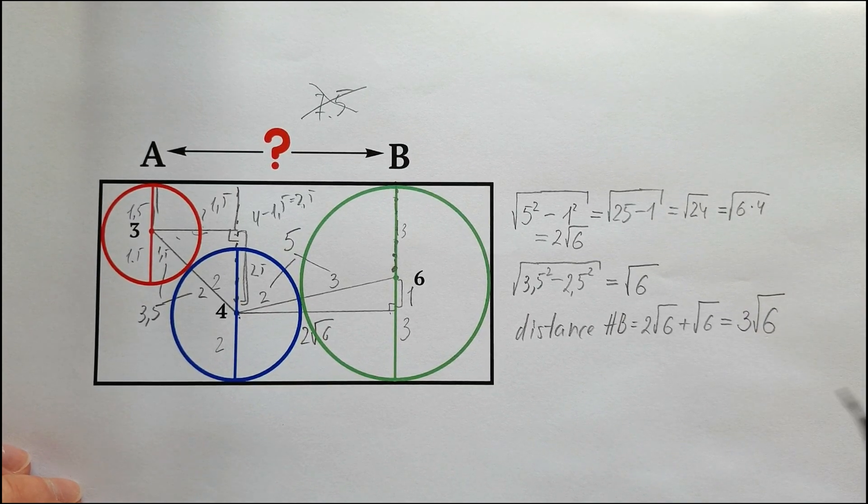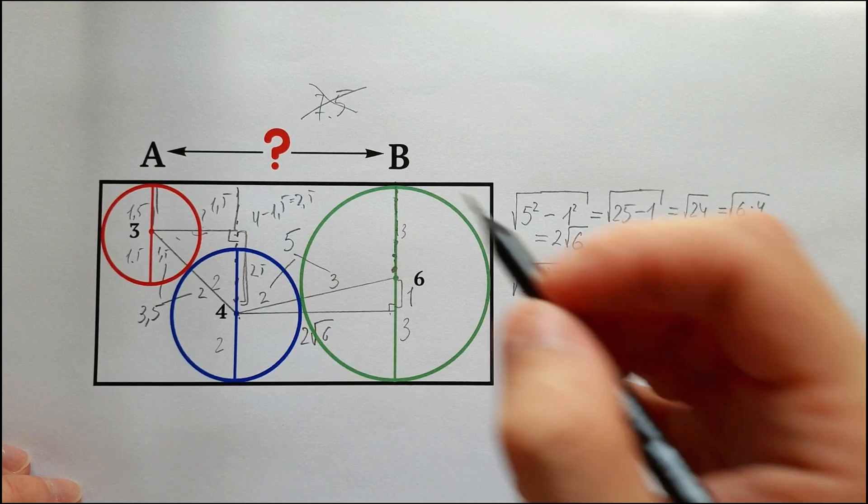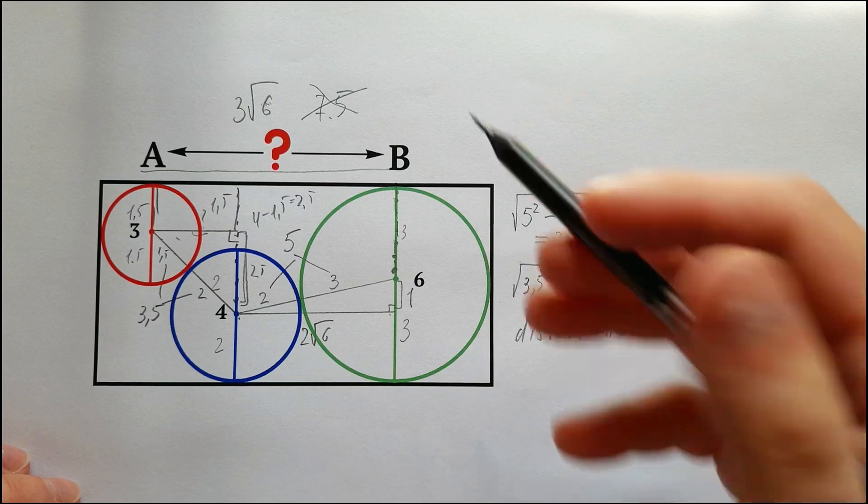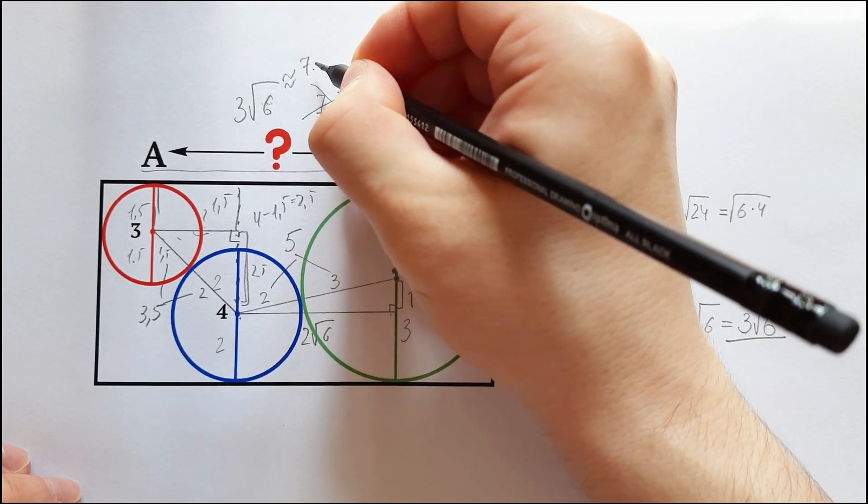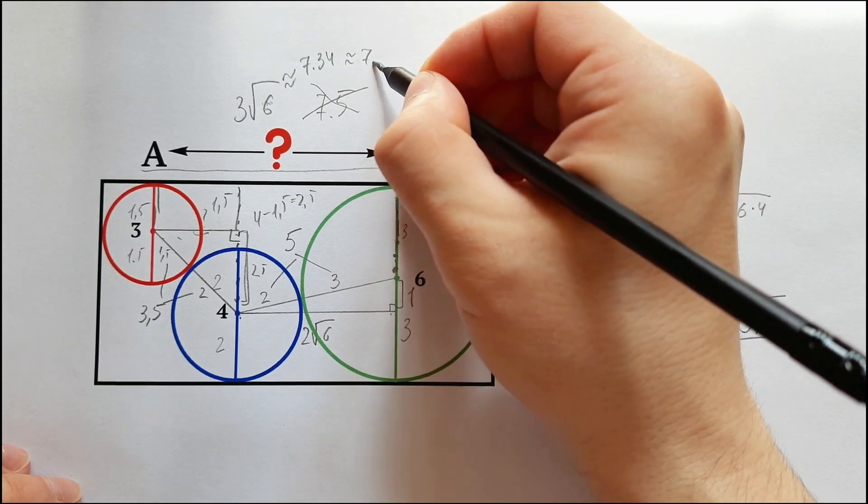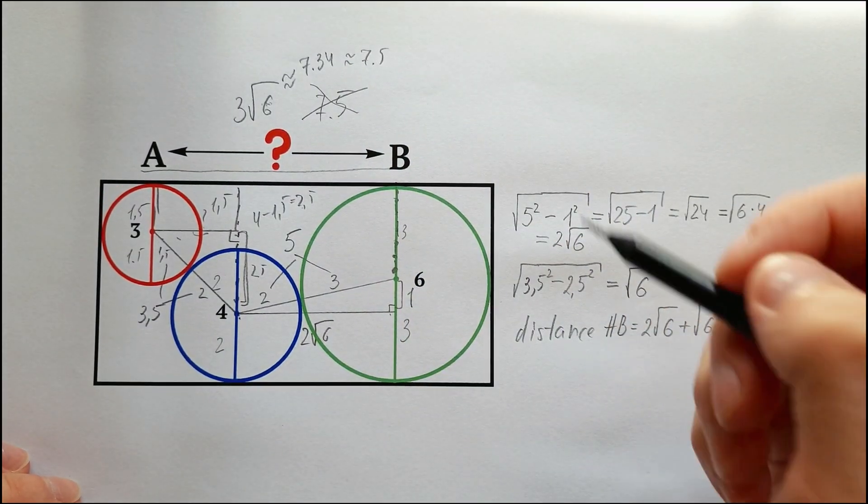I understand someone might suggest that the decimal representation of 3√6 is 7.34, which is close to 7.5 if eyeballing, but as I mentioned earlier, that estimation is incorrect.